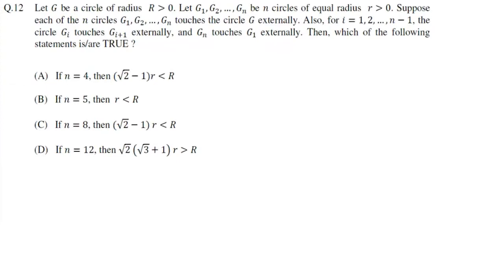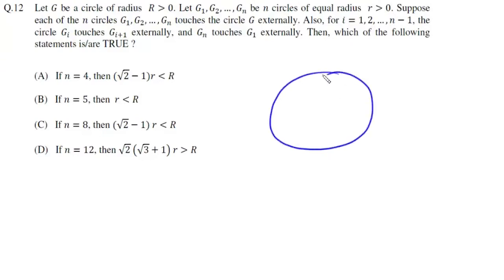Question number 12. We are given that G is a circle of radius R, which is greater than 0, and g1, g2, ... gn are n circles of equal radius r. Each of the n circles touches circle G externally, each circle touches its next circle, and gn touches g1.